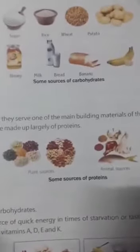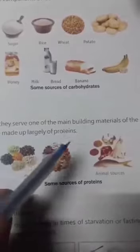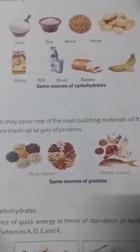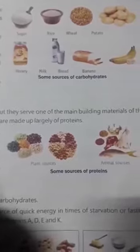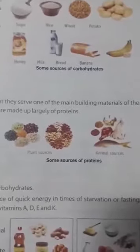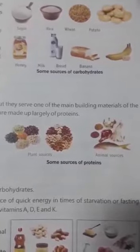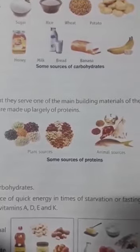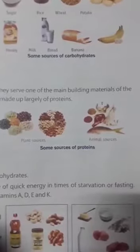Now, protein. Like carbohydrates, proteins also provide energy, but they serve as one of the main building materials of the body, so protein is called the building block of our body. Muscles, skin, cartilage and hair are examples of structures made up of proteins. There are two types: animal sources and plant sources. Animal sources include milk products, eggs, meats, fish and liver. Plant sources include cereals, pulses, dry nuts and beans. Soybean is an exceptionally rich source of protein.